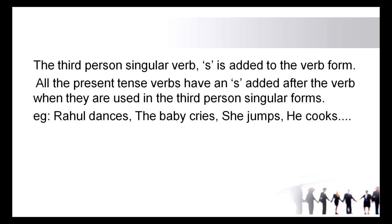In third person singular, S is added to the verb form; in some cases ES is added. All present tense verbs have S added after the verb when used in third person singular forms. For example: Rahul dances, the baby cries, she jumps, he cooks. In all these verbs you can see either S or ES added.